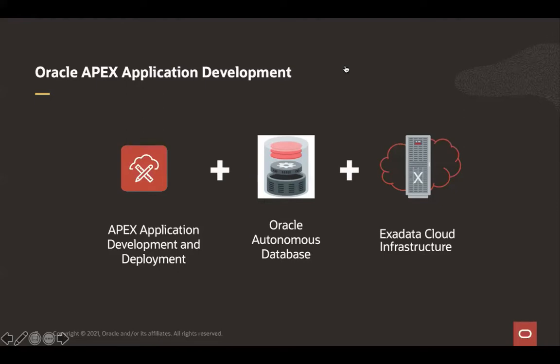With Apex service, you get Apex as a low-code platform and Autonomous Database where you can build applications on a variety of data types — relational, JSON, spatial, text, or blockchain — and it can handle any workload including transactions, streaming, IoT, and machine learning. Your applications will run on Exadata hardware. In today's workshop, we'll be creating an Apex instance and building an application on top of that.